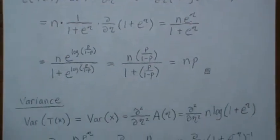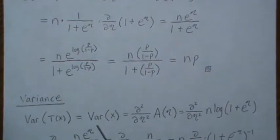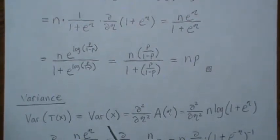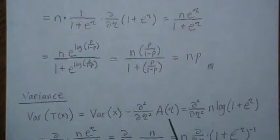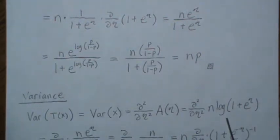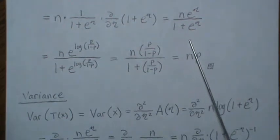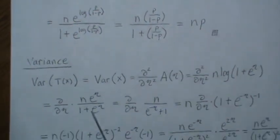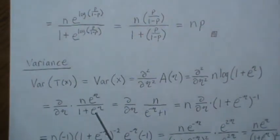Now to find the variance of our sufficient statistic, variance of x, you take the second derivative of the log partition, which is this. Now we found the derivative once here, so we just need to take the derivative of that.